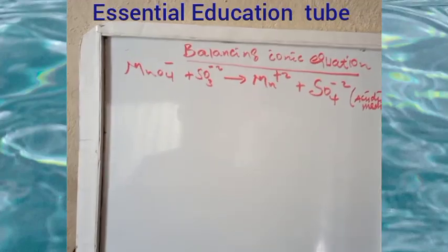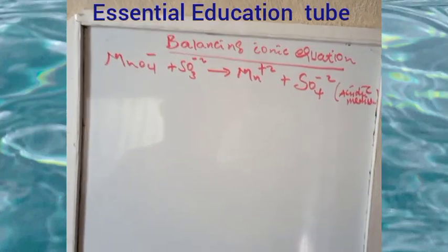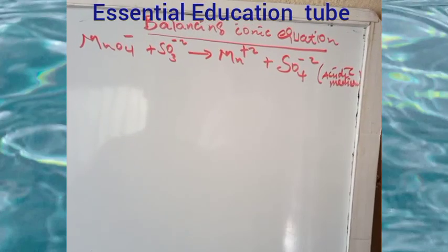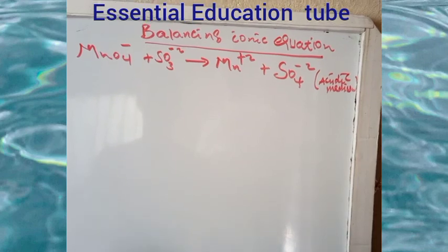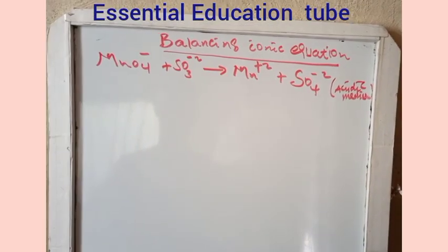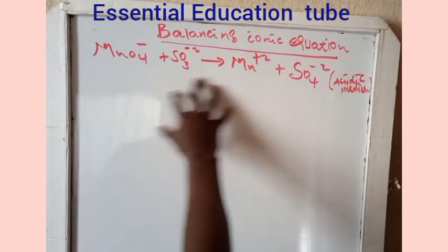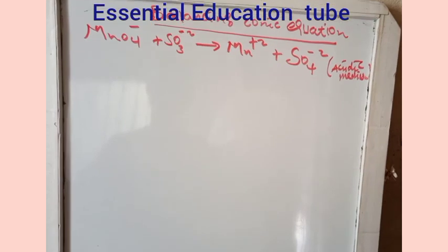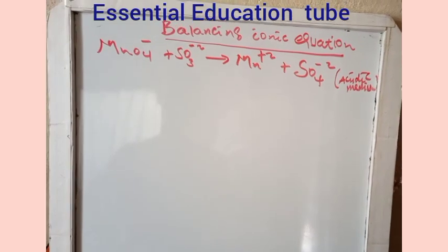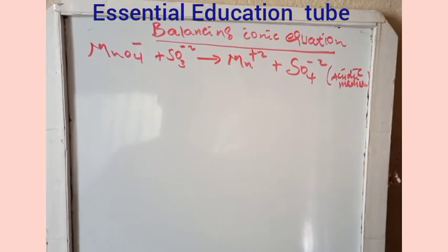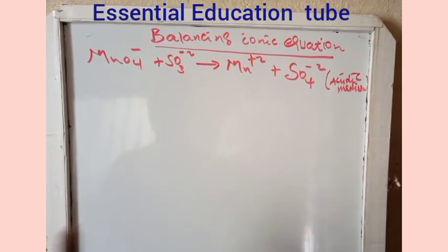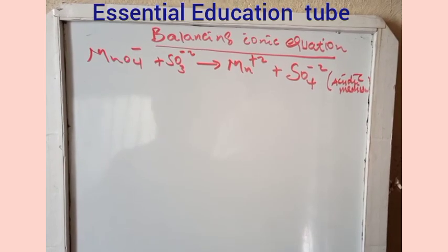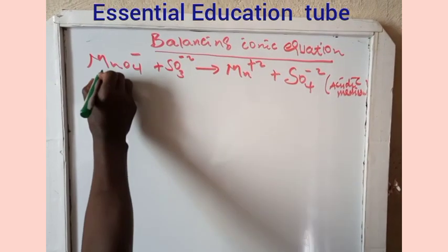Balancing Ionic Equations and Designed Ionic Equations — how can you balance them? In this case, you have to identify the half-reactions: the reduction half-reaction and the oxidation half-reaction.